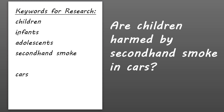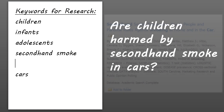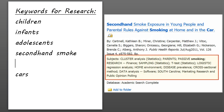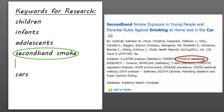Another method for choosing keywords is to use the subject terms found in library databases, catalogs, and discovery tools. Subject terms are standardized words and phrases that identify the item's content. Looking at one of our search results from earlier, a possible keyword that we could add to our list is 'passive smoking.' This is how the concept of secondhand smoke is described within this particular database.